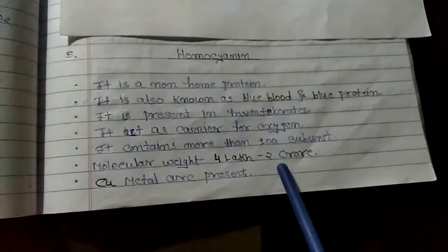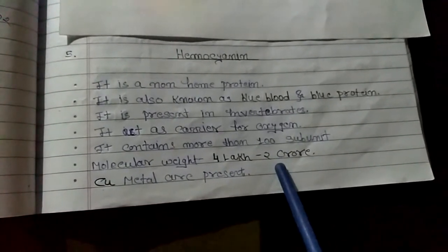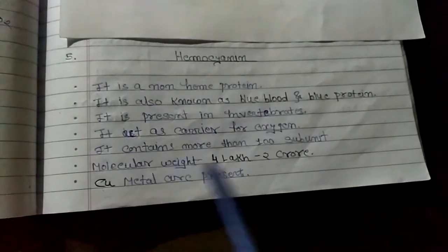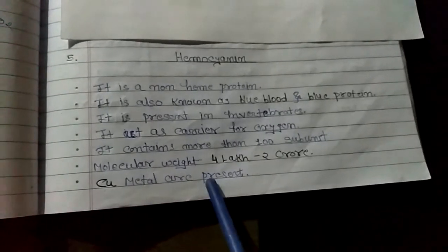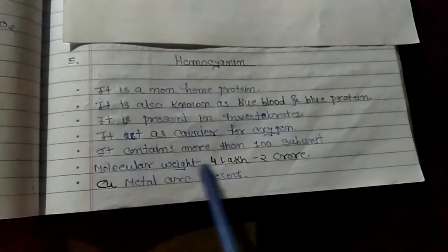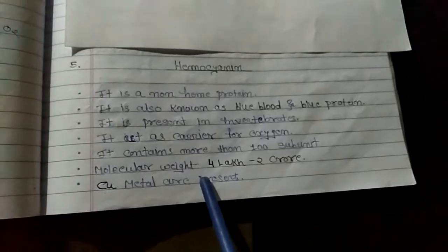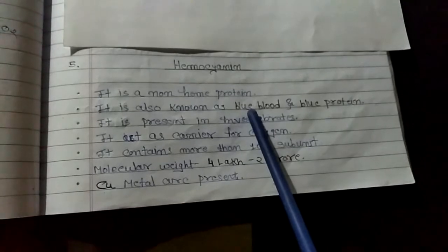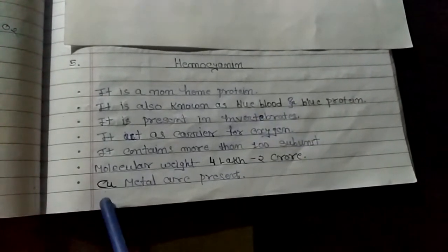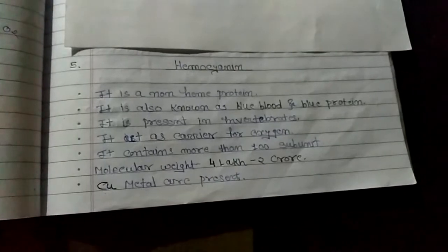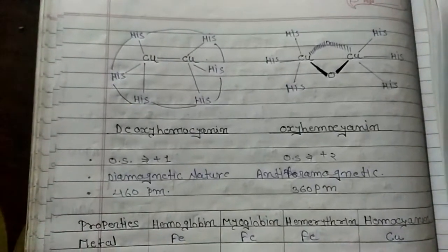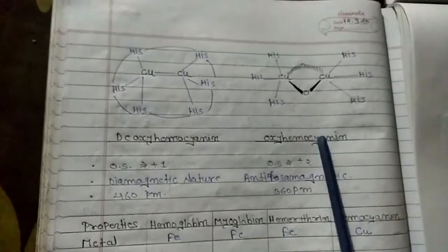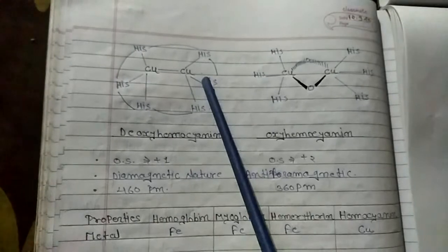Important point for CSIR NET: it has copper metal center atoms. There are two copper atoms in the active site.